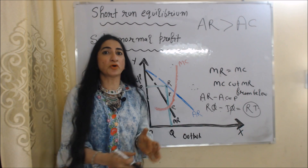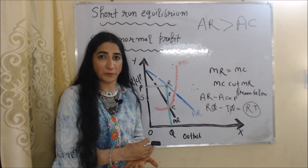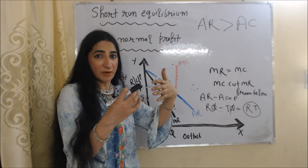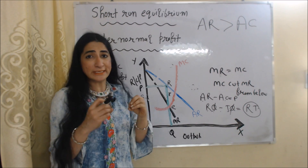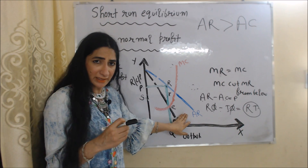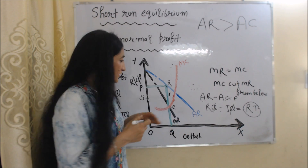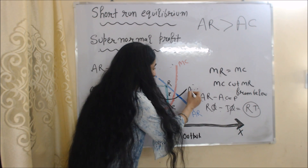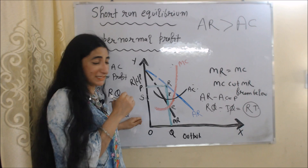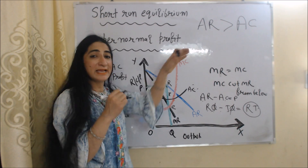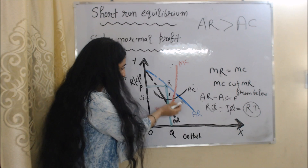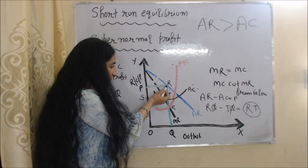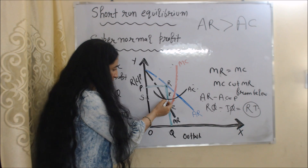Now, to find where the firm is getting supernormal profit, we need AR and AC, because the firm gets supernormal profit when AR is more than AC. We already have the AR curve. We now draw the average cost curve below the average revenue curve, because in the case of supernormal profit, AR is more than AC. You can see the blue curve is AR and the black curve is AC, with AC below AR.